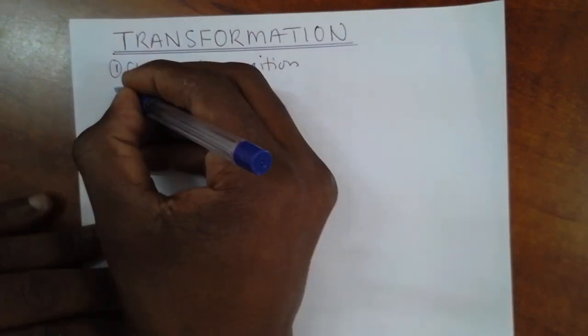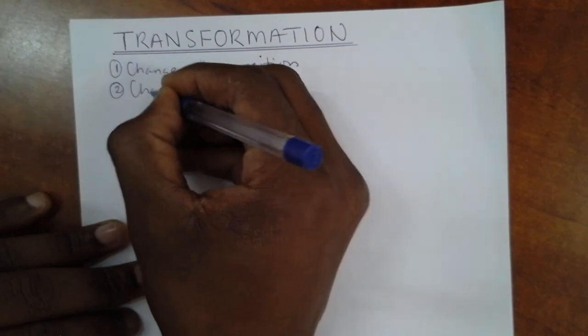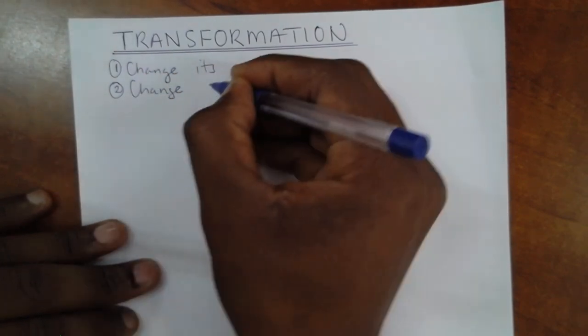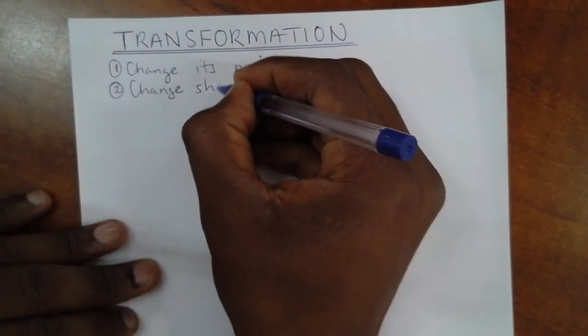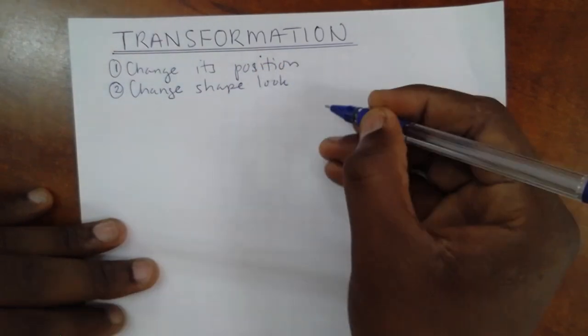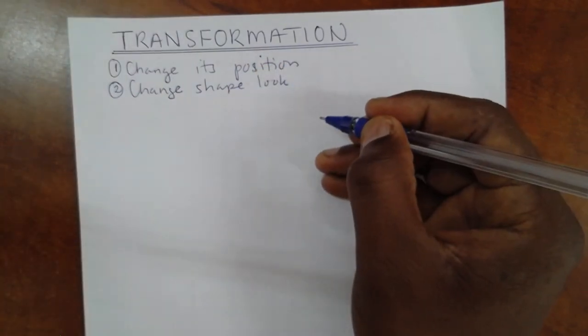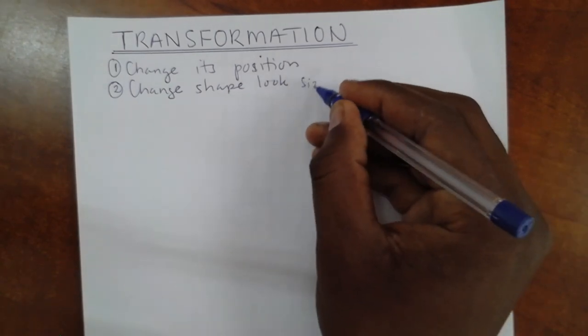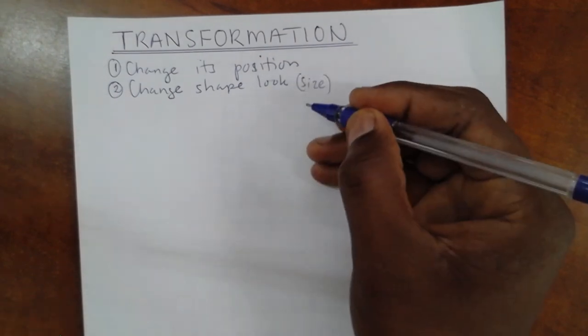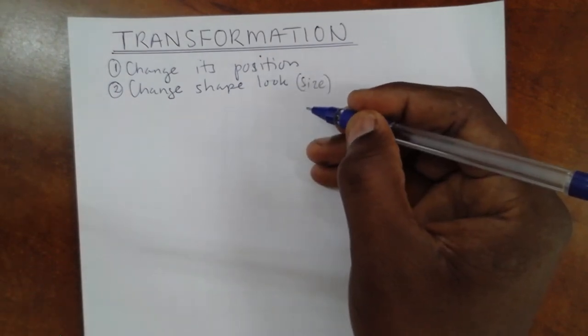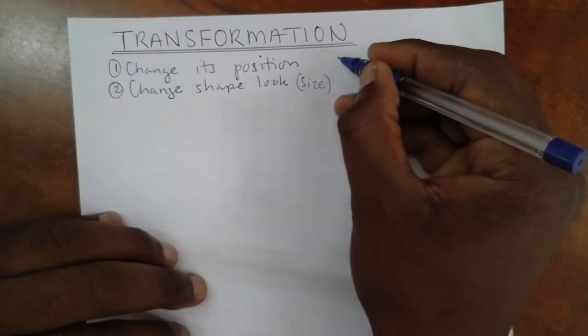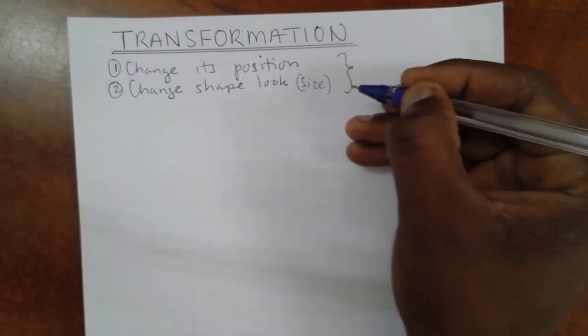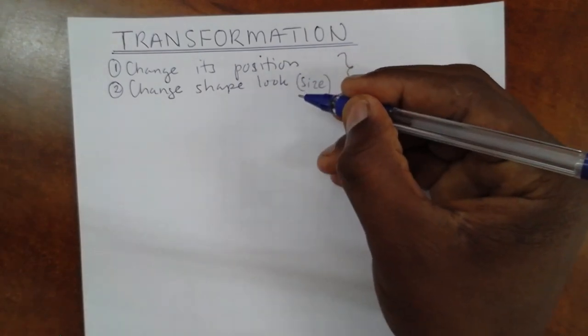In another meaning, to transform is to change shape look. Shape look can change in many ways, but for us our main concern will be on the size. So if the size was bigger, now we can make the size smaller. Or if the size was smaller, we can make the size bigger.